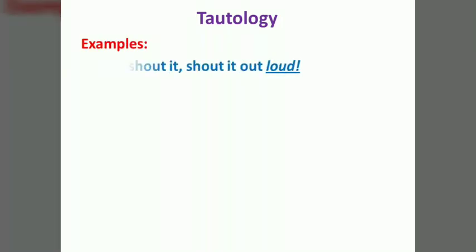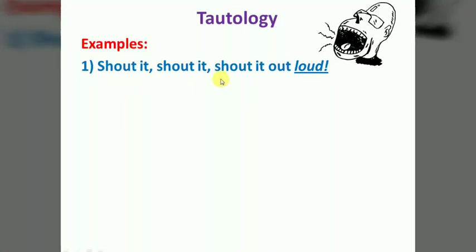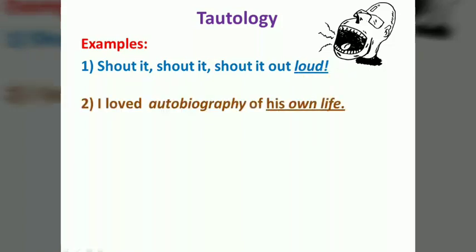For example, consider the phrase 'autobiography of his own life.' Now, autobiography already means it is about his own life — so saying 'of his own life' is redundant repetition. That is an example of Tautology.